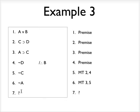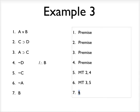So if you look at lines 1 and 6, you should see a disjunctive syllogism. And that will allow me to derive B by disjunctive syllogism. I'm going to abbreviate disjunctive syllogism, DS. And what lines? Lines 1 and 6. And that completes my proof.